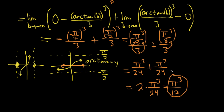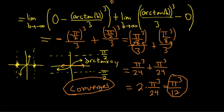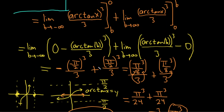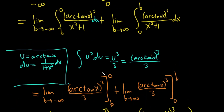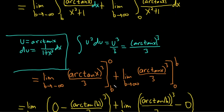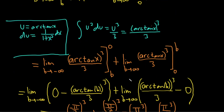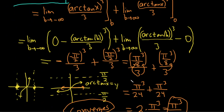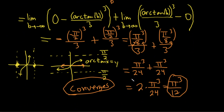And that's the answer. Because we got an actual number, the improper integral converges. This is a really nice example — it's not hard, and it shows you some properties of arctangent worth knowing. You get to break the integral up and apply the limit as b approaches negative infinity and as b approaches infinity. Just make sure to keep the limits separate and don't try to combine them.